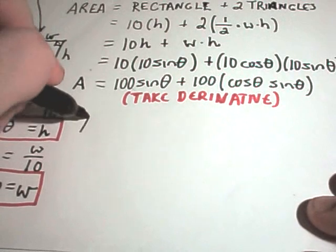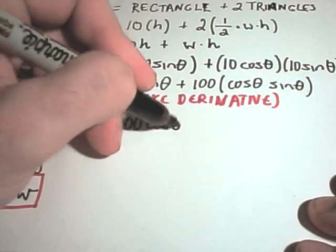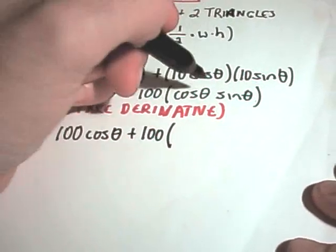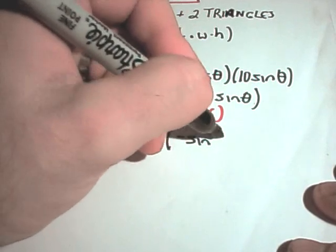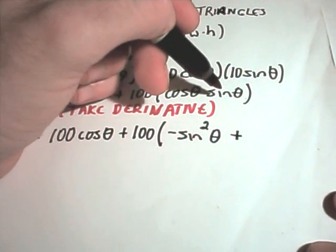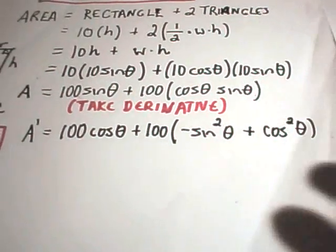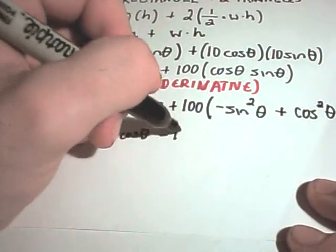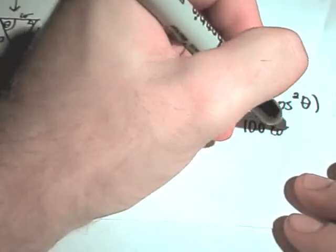Alright, so if I take the derivative of this thing, the derivative of sine theta is just cosine theta, so we'll get 100 cosine theta. I'll leave the 100 out front, and I'll do the product rule on the inside. So the derivative of cosine, I'll get negative sine theta, but I've already got a sine theta, so I'll get negative sine squared theta. Plus I've got a cosine theta, if I take the derivative of the sine theta, I'll get another cosine theta, so that'll give me cosine squared of theta. So what have I got? I've got 100 cosine theta, minus 100 sine squared theta, plus 100 cosine squared theta.